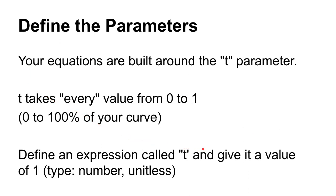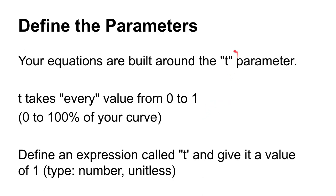To begin, we want to know how much of that equation we want to evaluate, essentially setting up the domain of the function. This is done with something called the t parameter. There will be an expression that you set up and name t — it doesn't have to be named t, but t is the default.